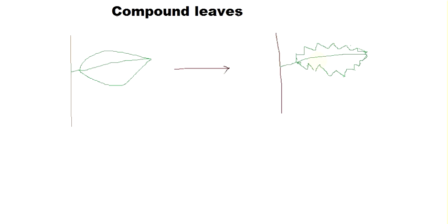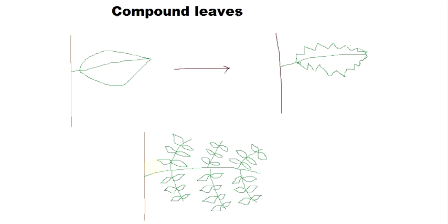Now let us think about what a compound leaf is. Here is a picture of a compound leaf. This type of leaf is not very uncommon — if you have ever seen a neem plant or coriander leaves, those are all compound leaves. This part here is not a branch coming out of the stem, but rather the midrib of the leaf.